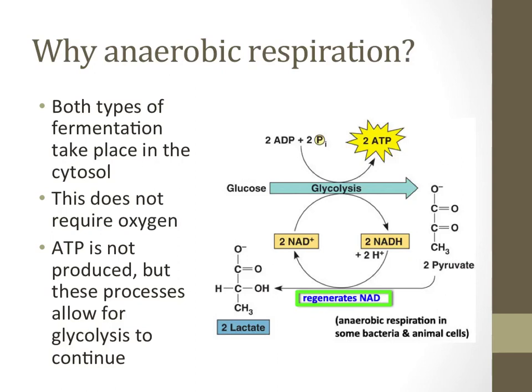The two ATP formed during anaerobic respiration come from the first step, glycolysis. What the rest of the steps of fermentation do is recycle waste products so that this process can continue at some level. The highlighted section on this slide shows the regeneration of NAD — converting NADH to NAD — without which glycolysis could not continue.